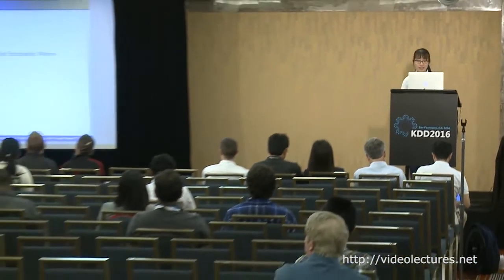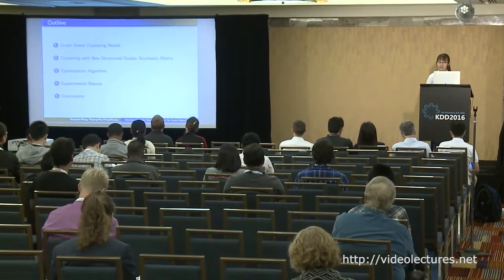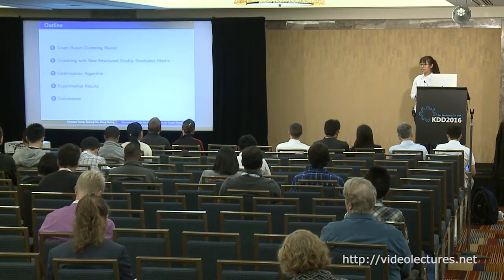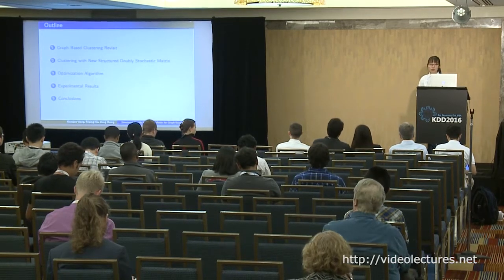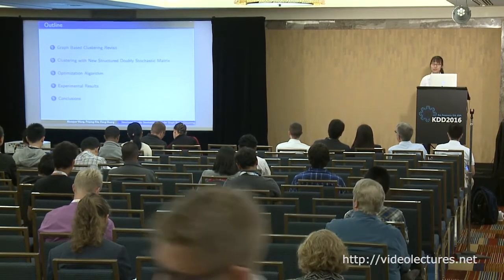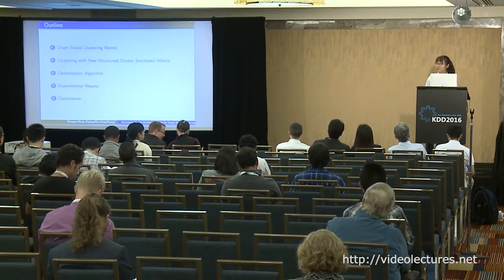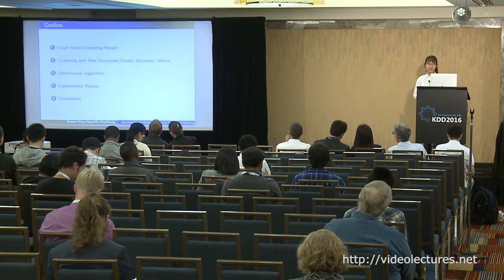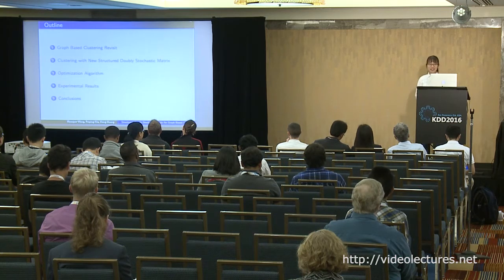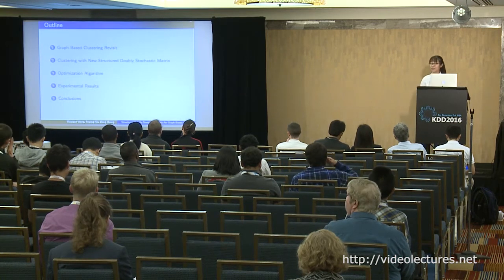Today I'd like to present our work titled Structured W-Stochastic Matrix for Graph-based Clustering. For today's presentation, we will first go over the background of graph-based clustering, especially the role played by the W-Stochastic Matrix. Afterwards, we will show the proposed model and the corresponding optimization steps. We also theoretically proved two interesting findings on the connection between our model and previous models like k-means and spectral clustering, which will be discussed in the methodology part. Then we will show some experimental results and conclude the paper.